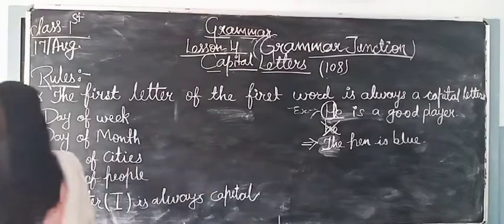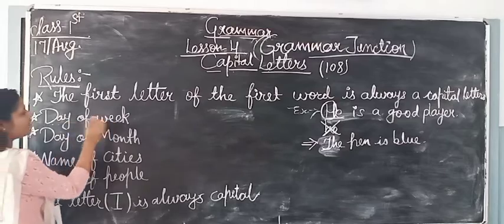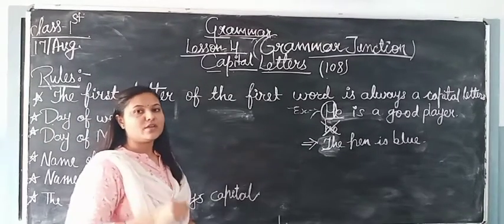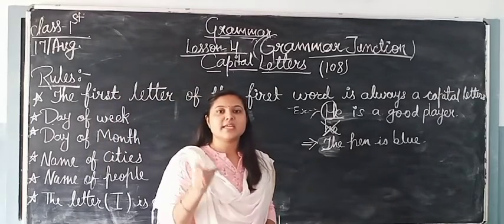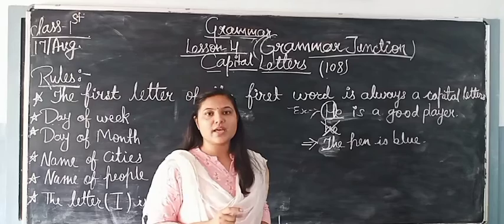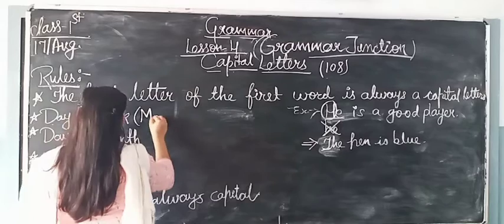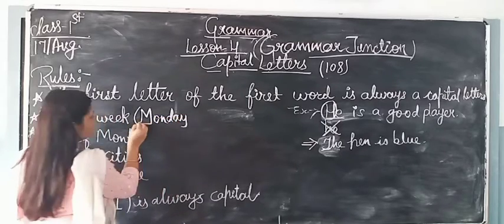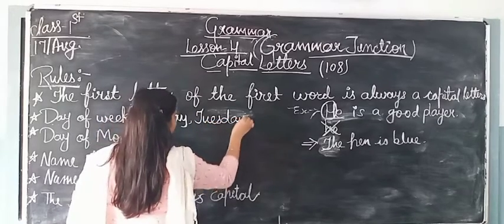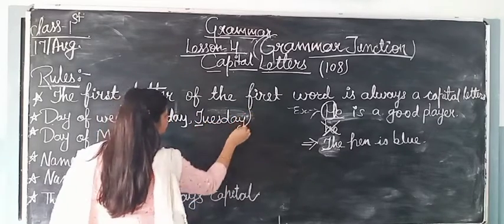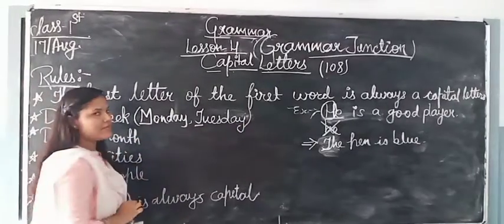The second rule is about days of the week. Day of week names, when they appear in the middle of a sentence or paragraph, their first letter is always capital. For example, M-O-N-D-A-Y — Monday, M is capital. T-U-E-S-D-A-Y — Tuesday, T is capital. So the day of the week name always has a capital first letter.